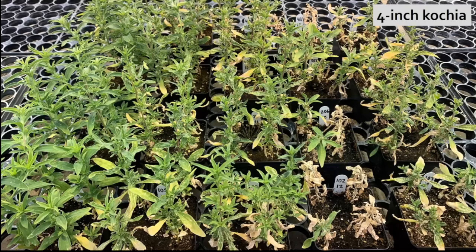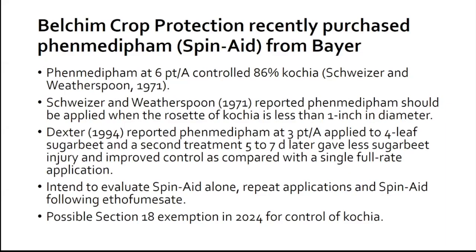Here is a greenhouse picture comparing UltraBlazer alone versus UltraBlazer with a non-ionic surfactant. The NIS provides additional control, and combining that with PowerMax gives complete control of kochia in this situation. At 4 inches, it is a significant contrast in control compared to the previous pictures. Belcom Crop Protection recently purchased fenmedifam, or SpinAid, from Bayer. It's currently used on spinach and red beets, but they are looking at registering it for sugar beets. Historical data from the 1970s shows it provided kochia control, and Dr. Peters intends to evaluate SpinAid with modern sugar beet varieties. If effective, a Section 18 exemption in 2024 might be our best path forward for controlling kochia at Sydney Sugars.